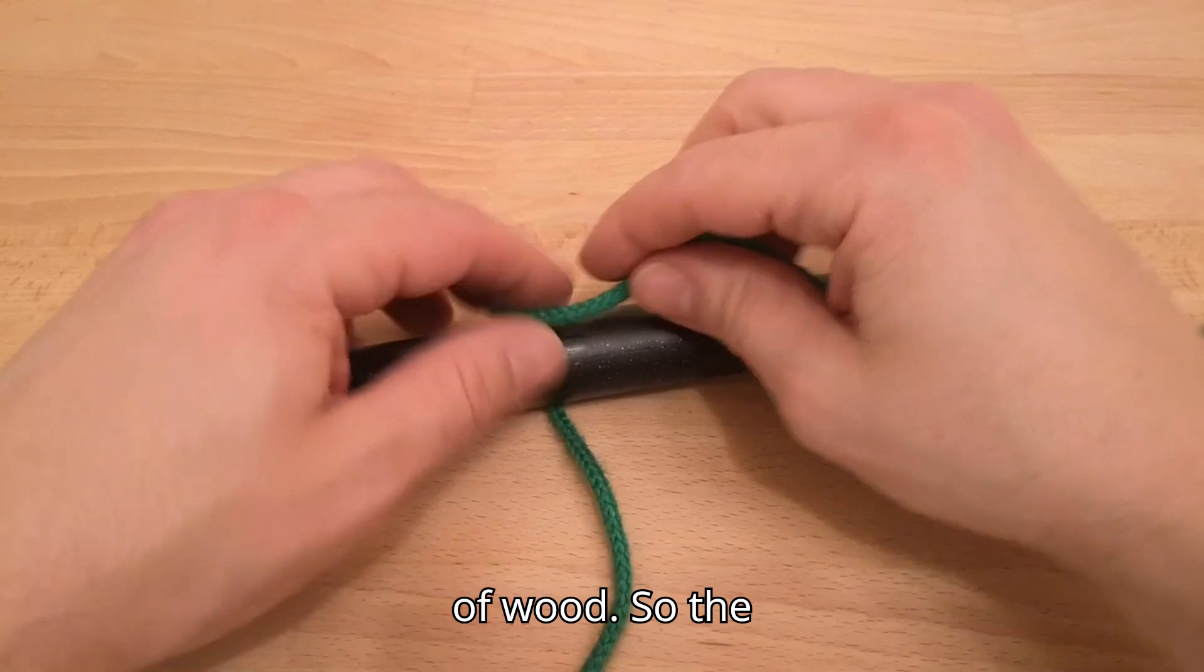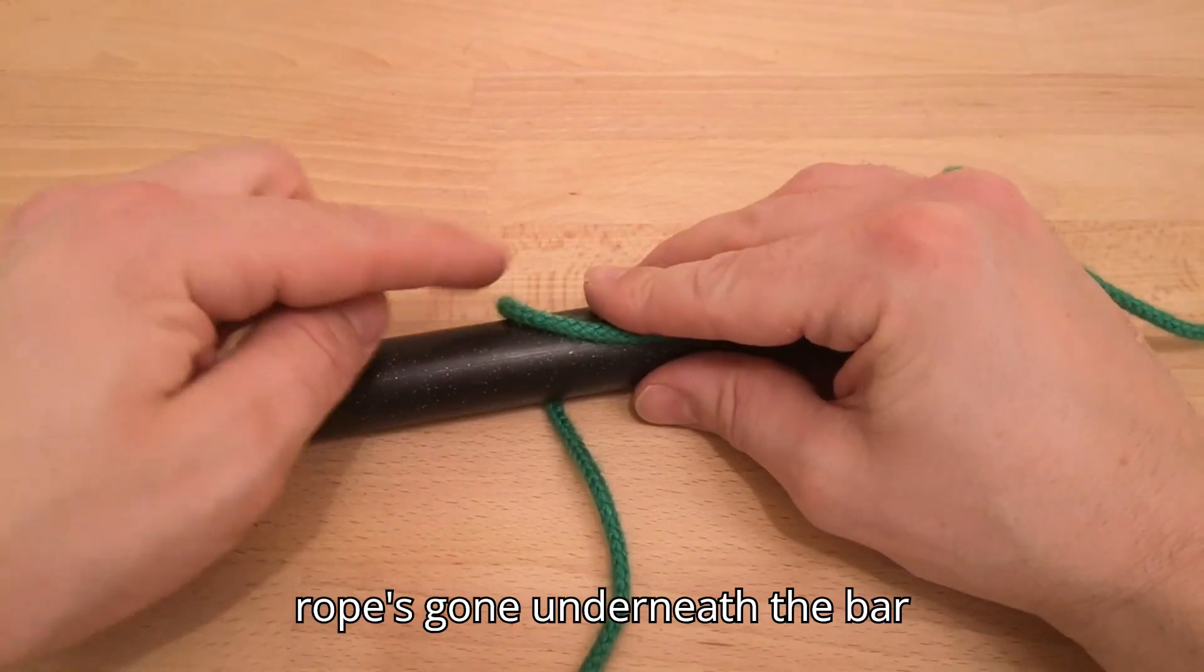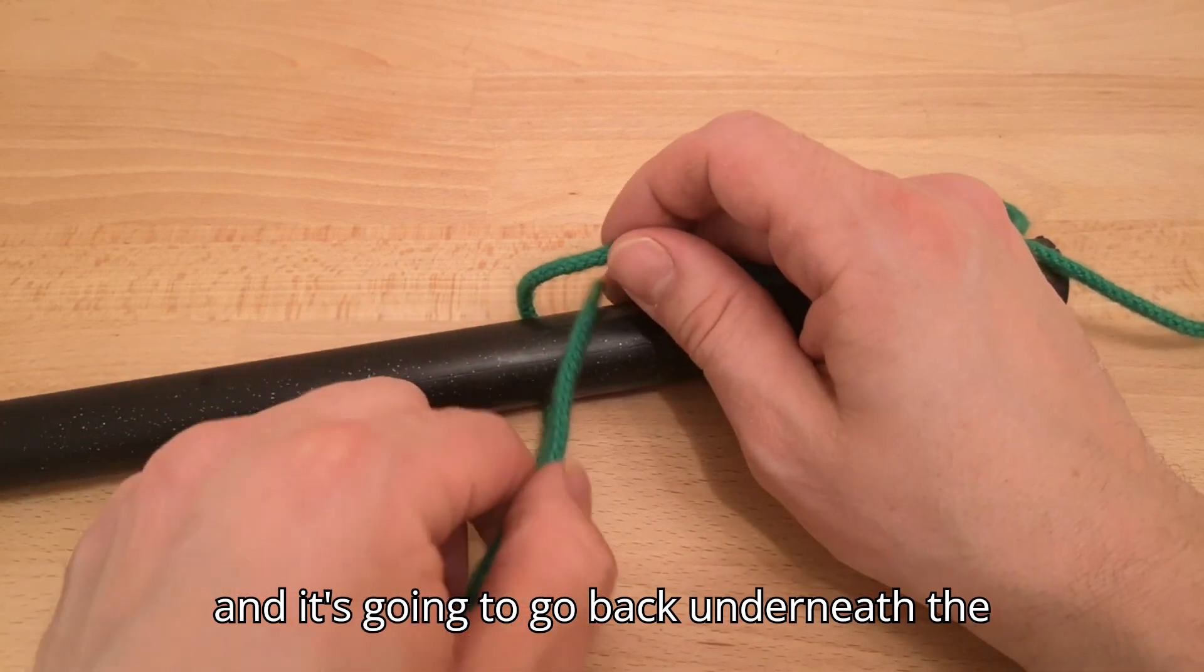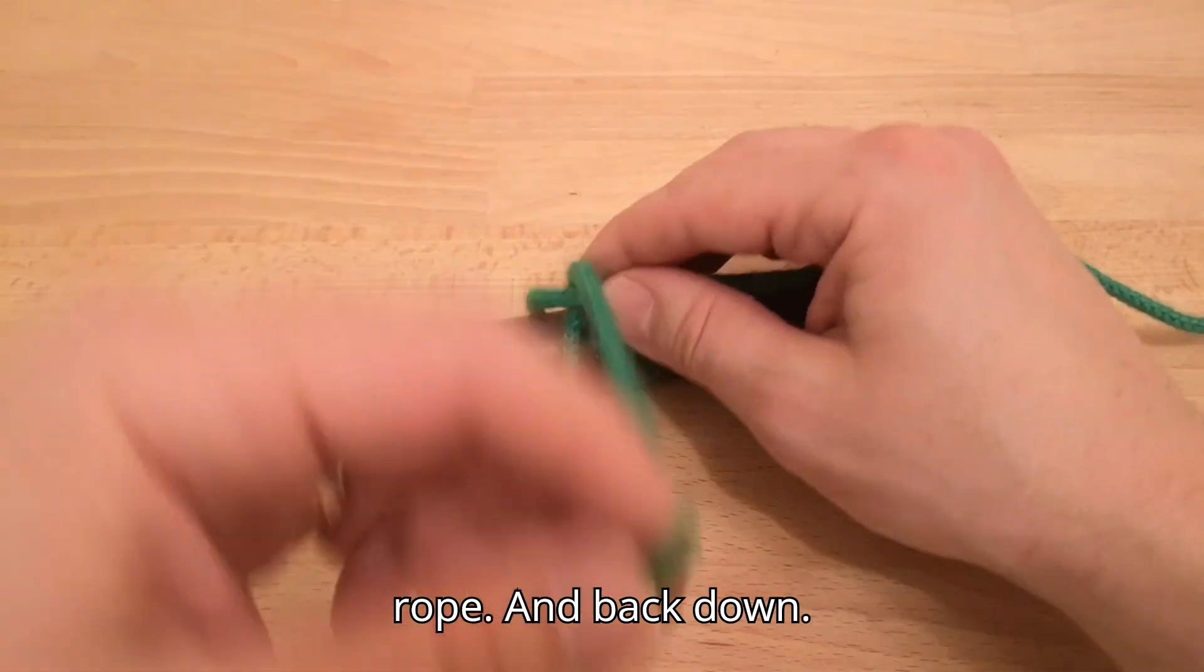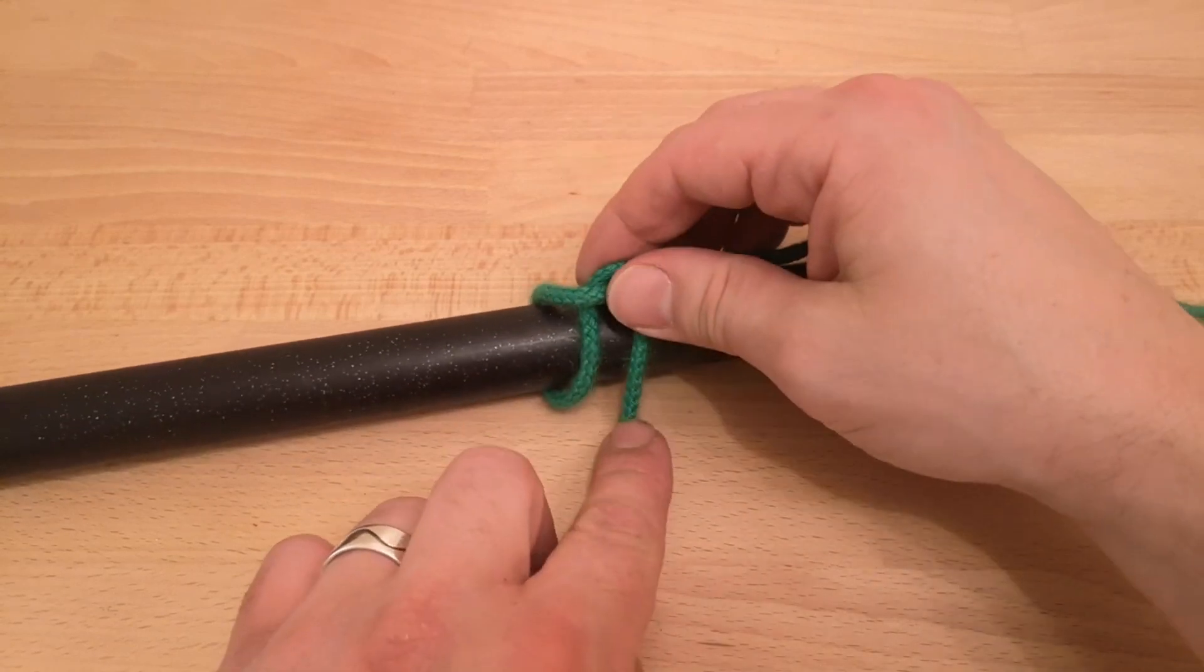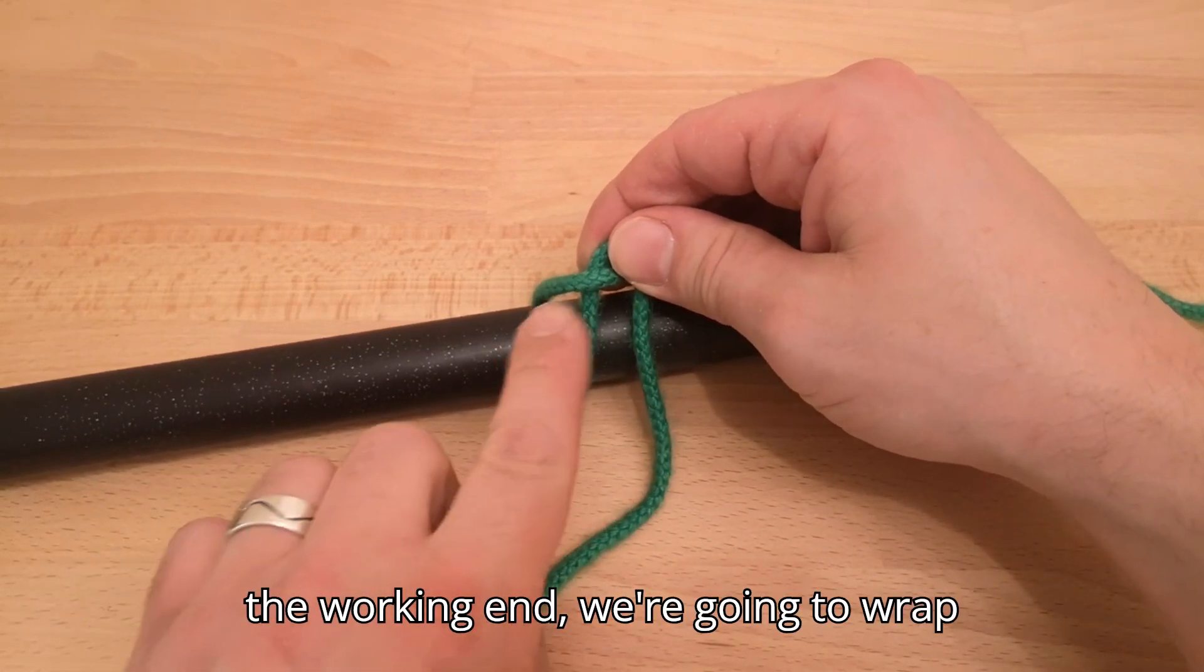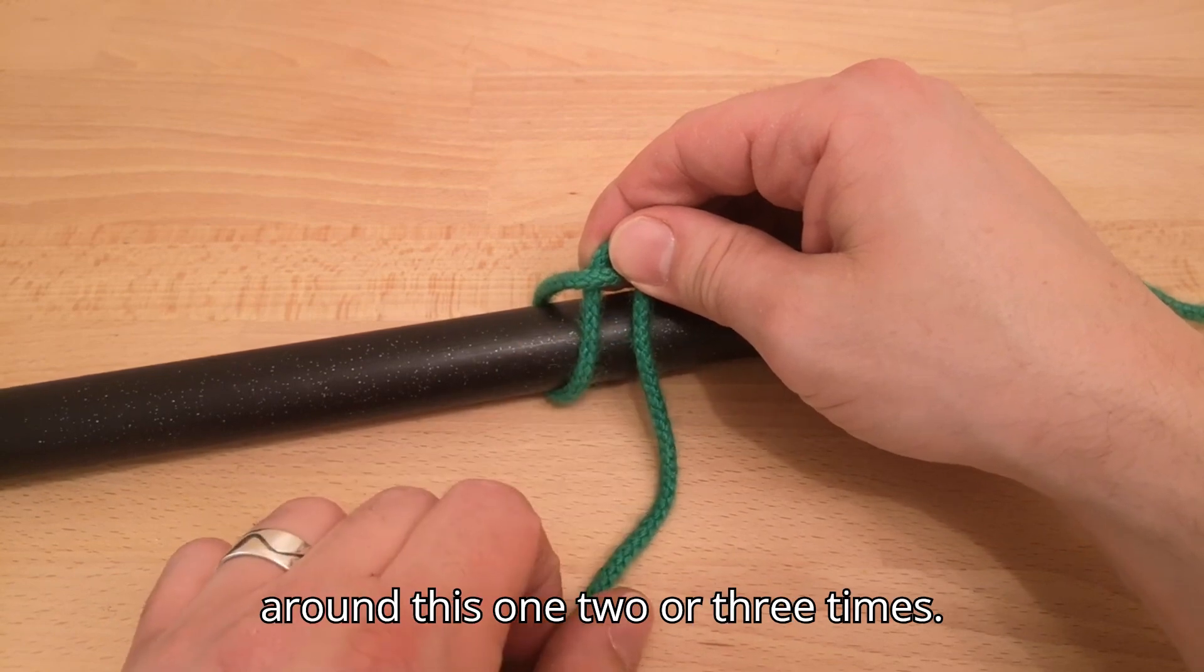So the rope's gone underneath the bar and it's going to go back underneath the rope and back down like that. Now this end, the working end, we're going to wrap around this one, two, or three times.